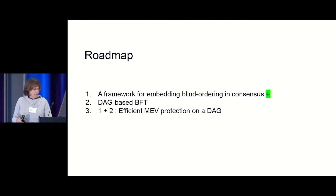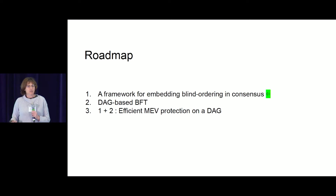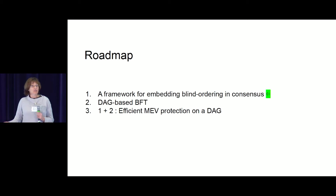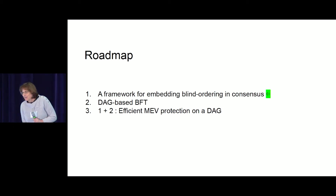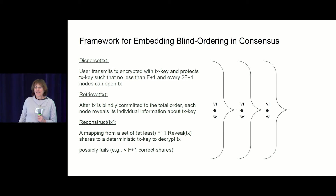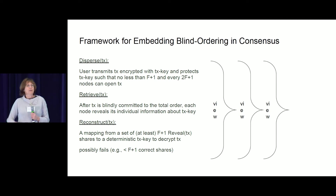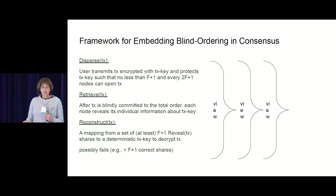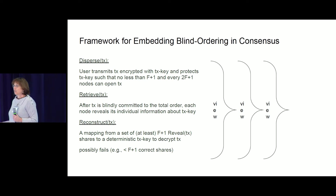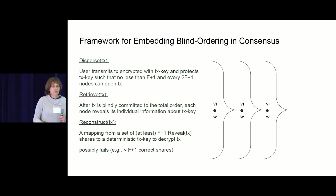I want to talk about a framework for embedding blind ordering in a BFT consensus engine and how to make it efficient to meet the throughputs of these recent advances. The idea is simple: use threshold mechanisms where a user sends a transaction encrypted with TX key, such that it requires F+1 out of 3F+1 to open it, but can always be opened with 2F+1. This is the dispersal phase. After transactions are committed to the total ordering blindly, you retrieve shares and open them to reconstruct in a deterministic, guaranteed way.